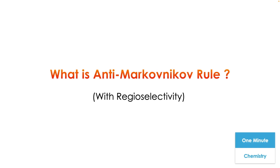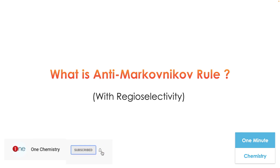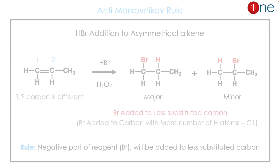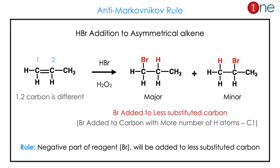Welcome to One Chemistry. This is the One Minute Chemistry series. We are going to quickly see what is the anti-Markovnikov rule. With respect to regioselectivity, the anti-Markovnikov rule states that in HBr addition to an asymmetrical alkene, the bromine adds to a specific carbon.